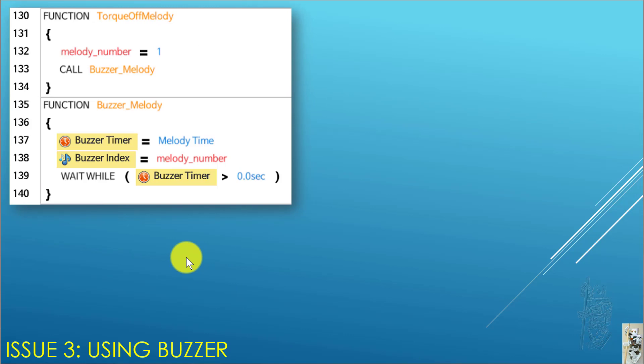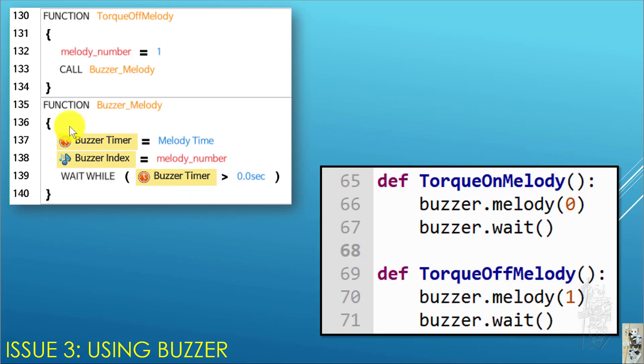Next, how to use the buzzer. In Task, remember the buzzer, you have to specify the melody time or the tune, and then the time period, like five seconds. The buzzer index, melody number, and then you always have to have that wait while loop. In MicroPython, very easy. Buzzer.melody zero, if you want to play melody zero, and your buzzer wait. Same thing you play melody one, buzzer wait. So this one, at least, easy to understand, easy to use.